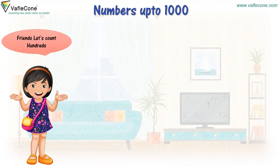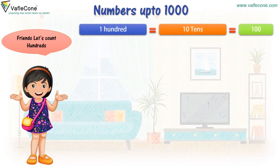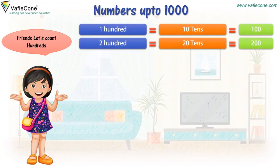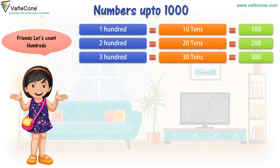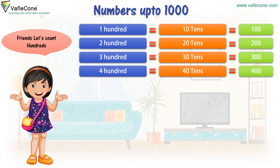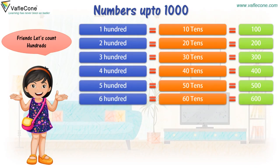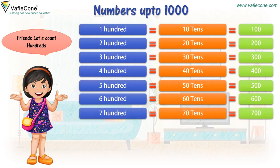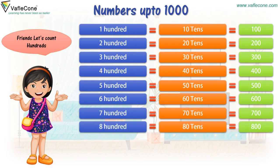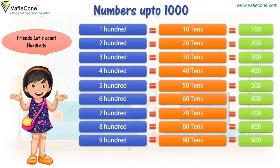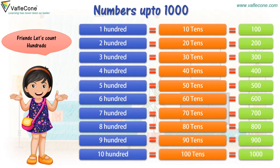Friends, let's count hundreds. 100 is equal to 10 tens. 200 is equal to 20 tens. 300 is equal to 30 tens. 400 is equal to 40 tens. 500 is equal to 50 tens. 600 is equal to 60 tens. 700 is equal to 70 tens. 800 is equal to 80 tens. 900 is equal to 90 tens. 1,000 is equal to 100 tens.